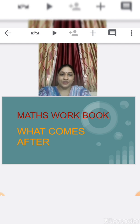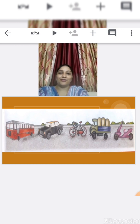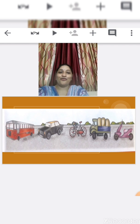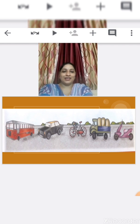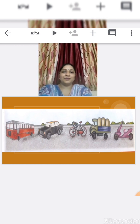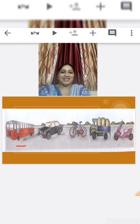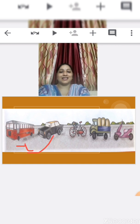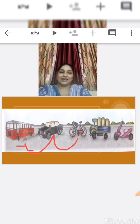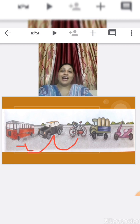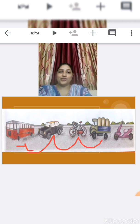What comes after? Teacher is going to show you some pictures. Tell me children, what are these? Yes, these are vehicles. Which vehicle comes first in a row, children? Yes, a bus. After bus, a taxi. After taxi, a bicycle. After bicycle, a truck. After truck, a scooter.